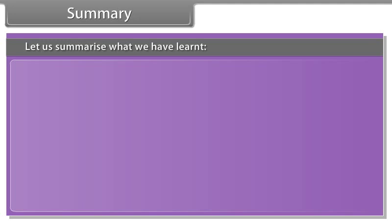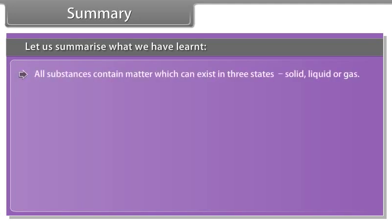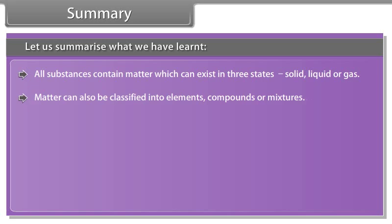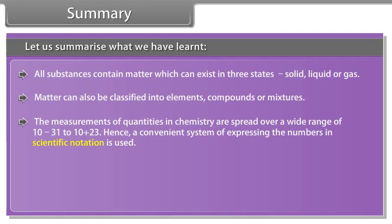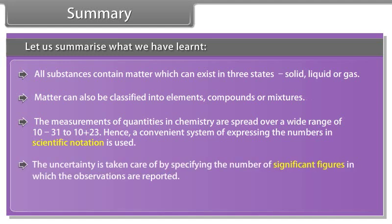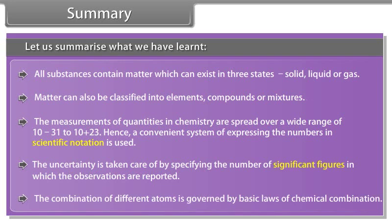Let us summarize what we have learned. All substances contain matter which can exist in three states: solid, liquid or gas. Matter can also be classified into elements, compounds or mixtures. The measurements of quantities in chemistry are spread over a wide range of 10⁻³¹ to 10²³. Hence, a convenient system of expressing the number in scientific notation is used. The uncertainty is taken care of by specifying the number of significant figures in which the observations are reported. The combination of different atoms is governed by basic laws of chemical combination.